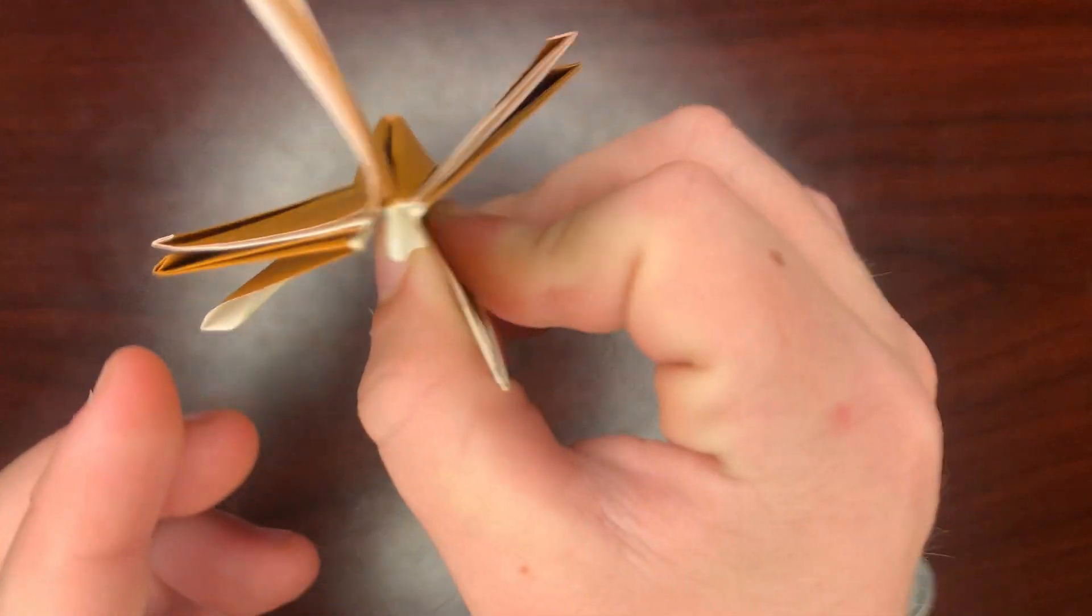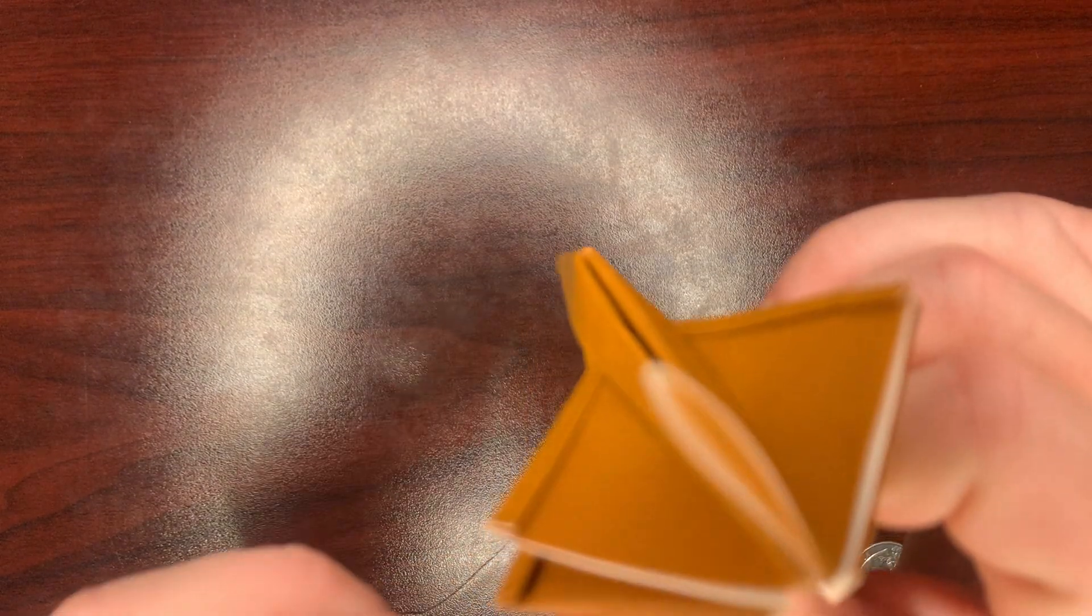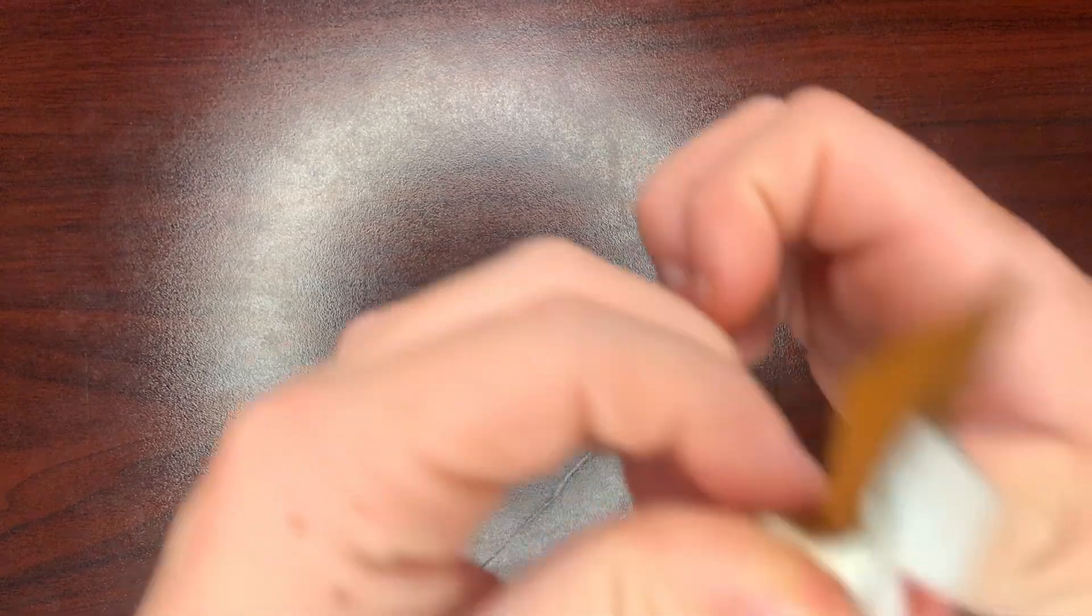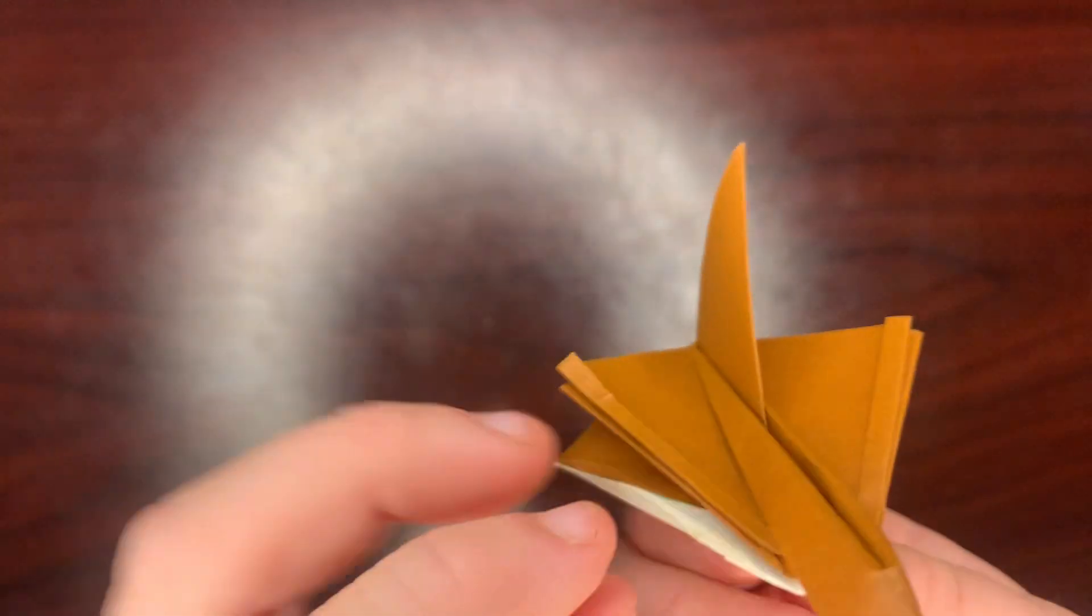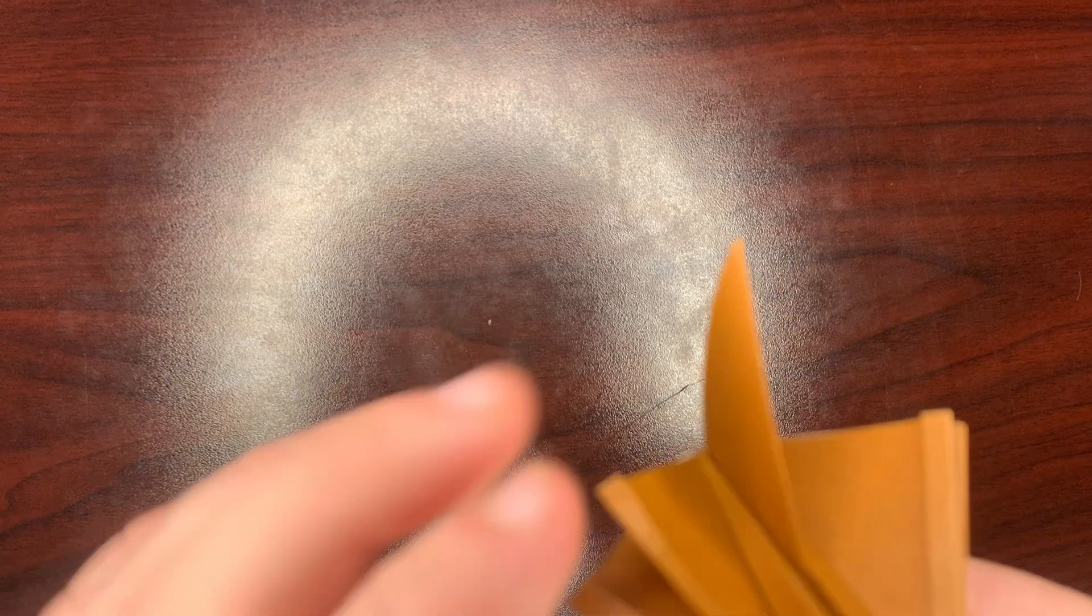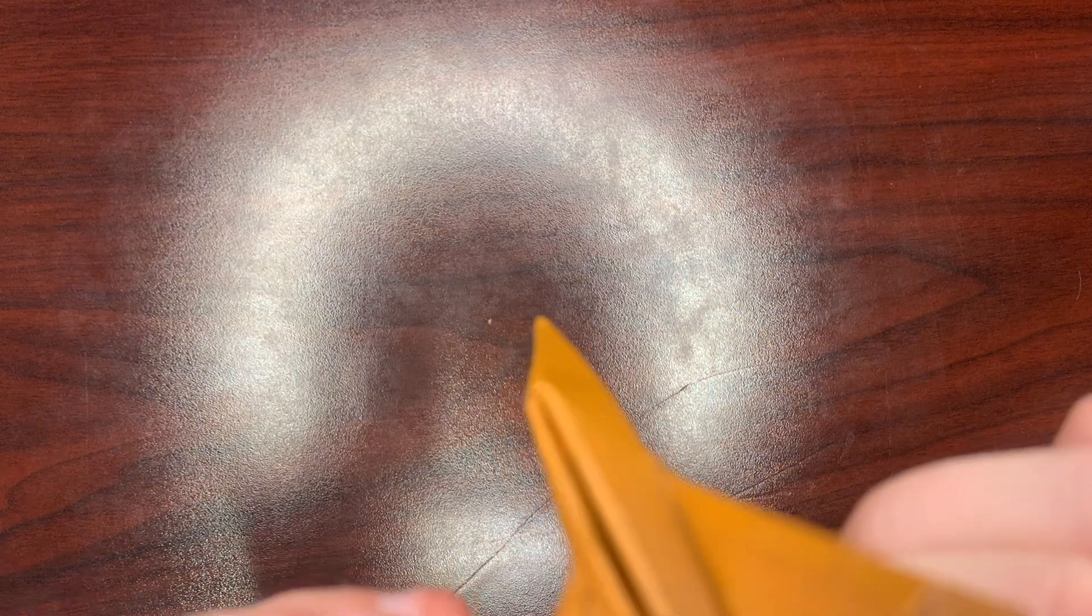So you're basically done with the plane. All you have to do now is shape the air intake. You can add afterburners here if you want, but it will kind of be a hard step. Shape it to your liking for the wings. When you're flying it, they have to be all at equal angles, kind of like this.